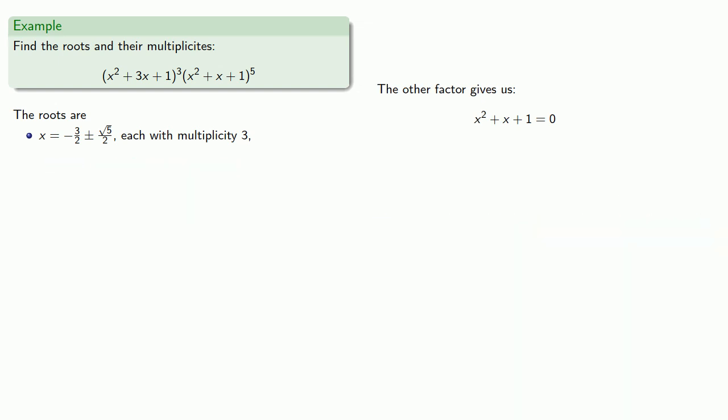The other factor gives us some more roots, so we solve. And since this factor appears 5 times, these roots have multiplicity 5.